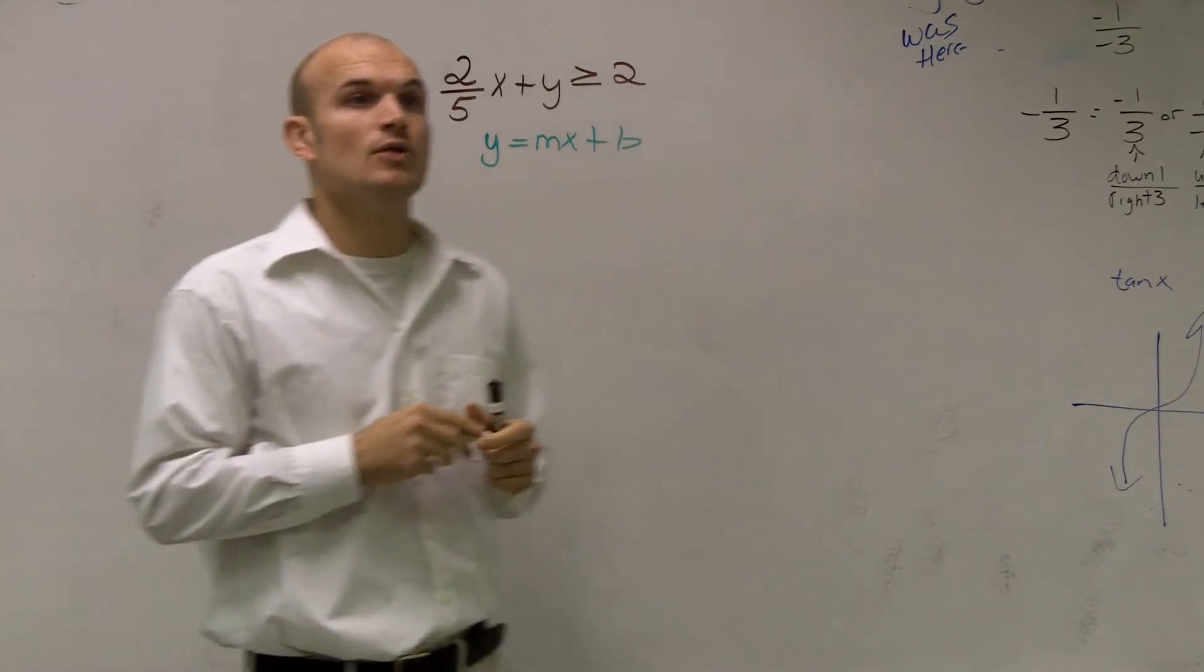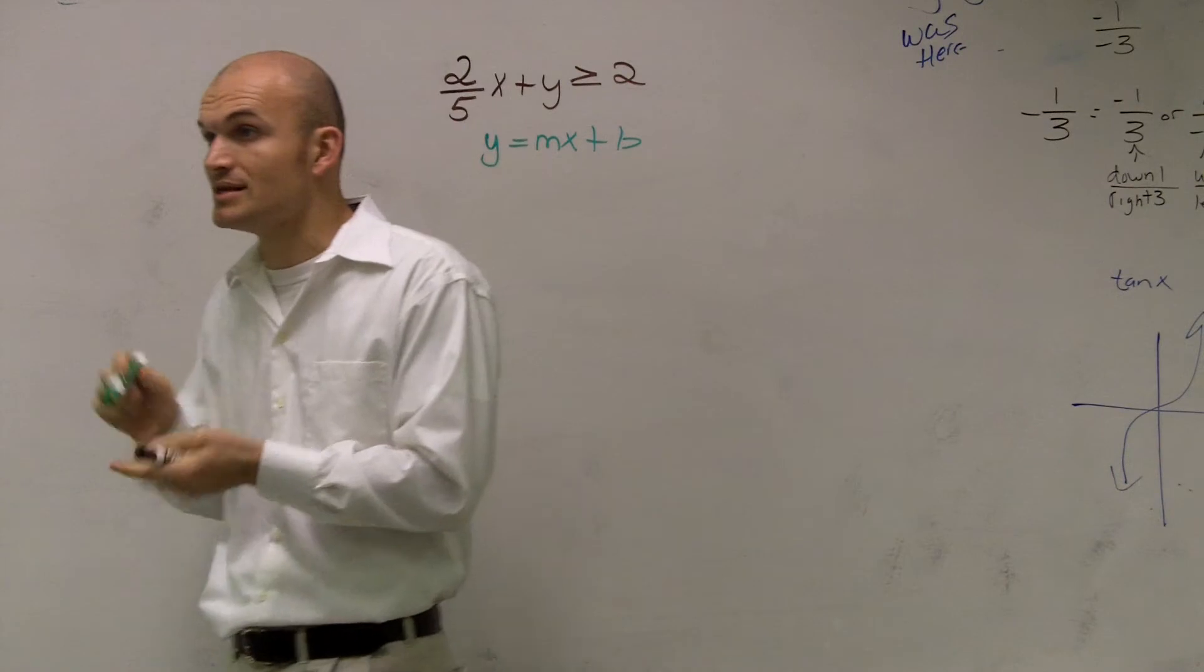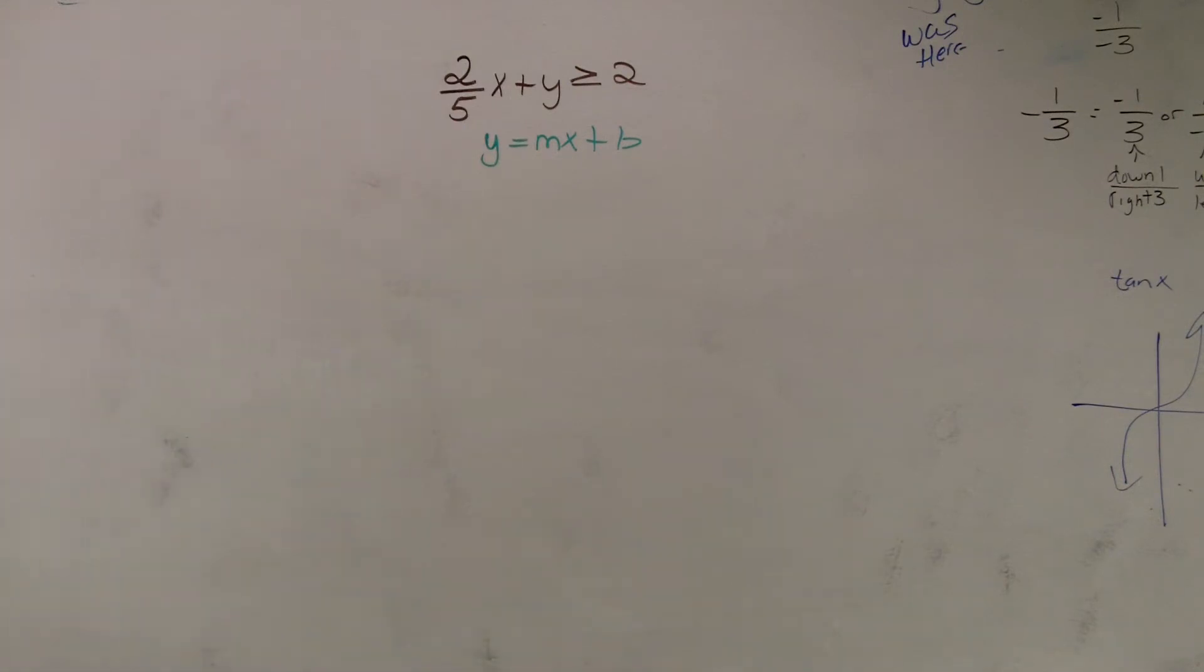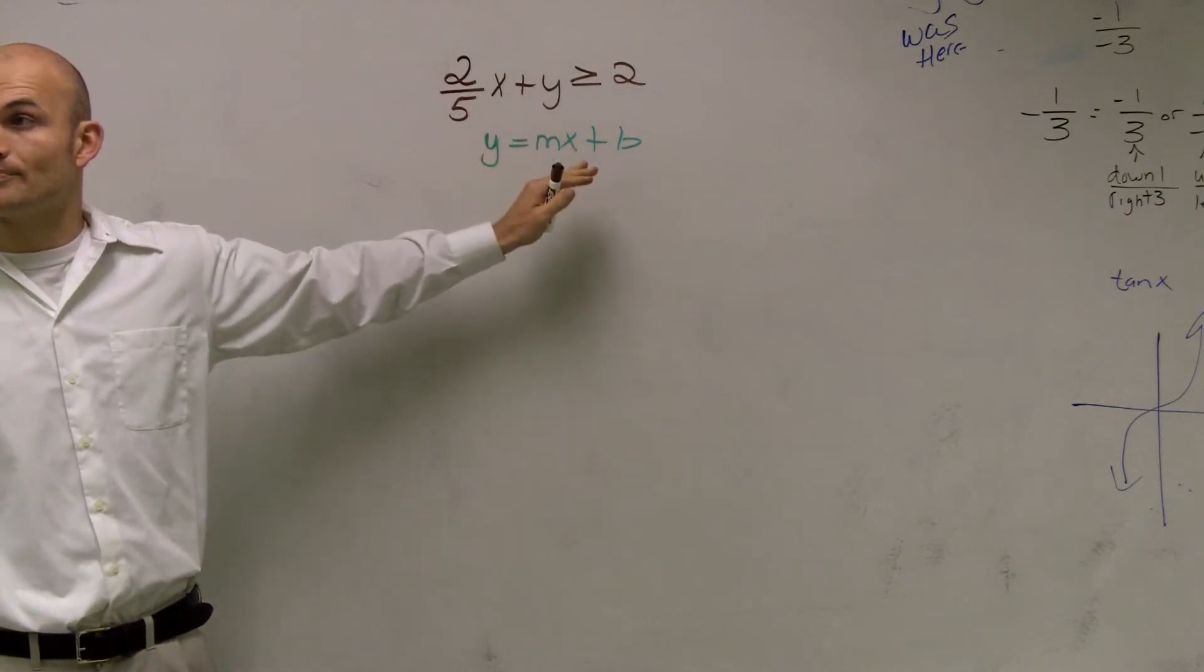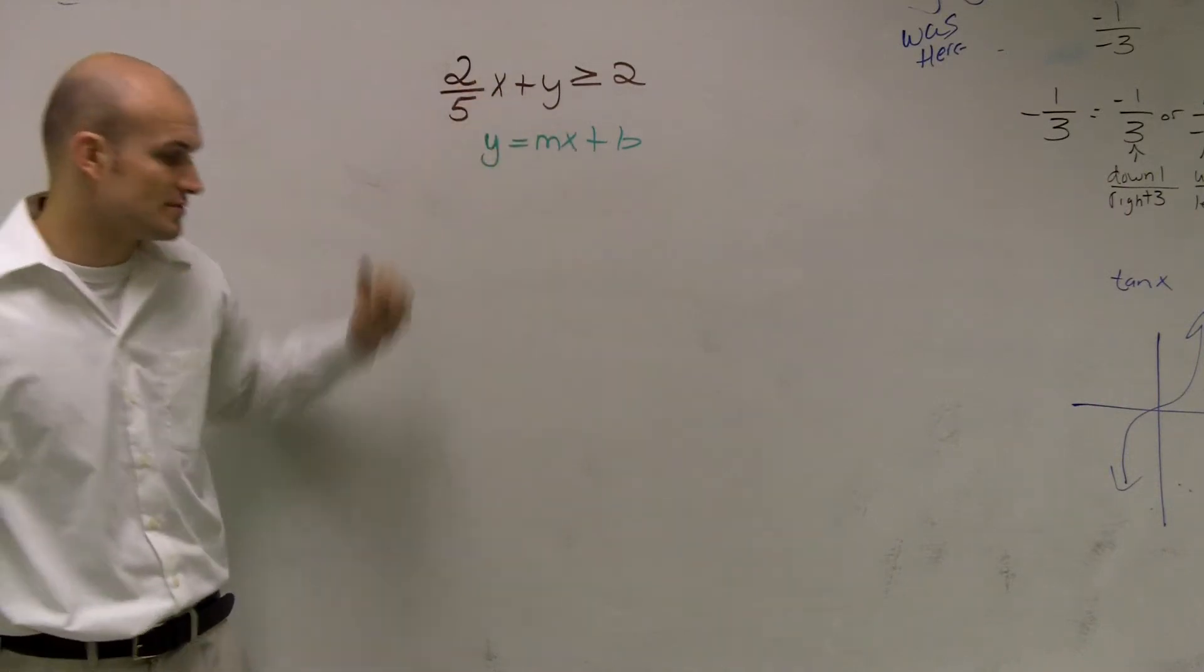Right? Because when we had it in that form, we knew exactly what our y-intercept was, and we knew exactly what the slope was. So the problem that we have right now is this is not in y equals mx plus b form, right? We don't have our y solved by itself.